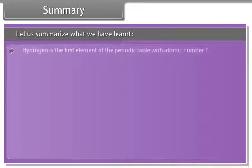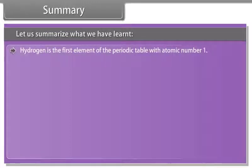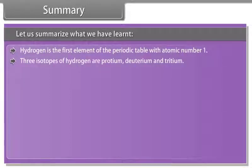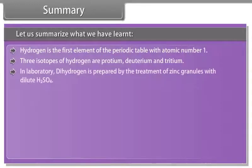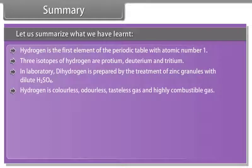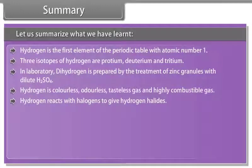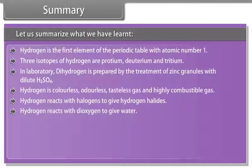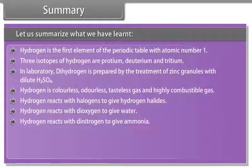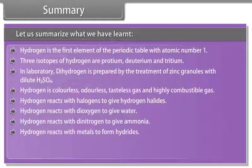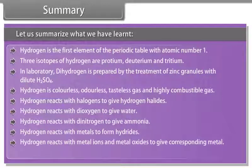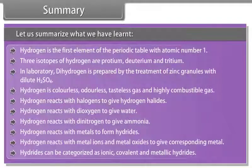Summary. Let us summarize what we have learned. Hydrogen is the first element of the periodic table with atomic number 1. Three isotopes of hydrogen are Proteum, Deuterium and Tritium. In laboratory, dihydrogen is prepared by the treatment of zinc granules with dilute sulphuric acid. Hydrogen is colorless, odorless, tasteless gas and highly combustible gas. Hydrogen reacts with halogens to give hydrogen halides. Hydrogen reacts with dioxygen to give water. Hydrogen reacts with dinitrogen to give ammonia. Hydrogen reacts with metals to form hydrides. Hydrogen reacts with metal ions and metal oxides to give corresponding metal. Hydrides can be categorized as ionic, covalent and metallic hydrides.